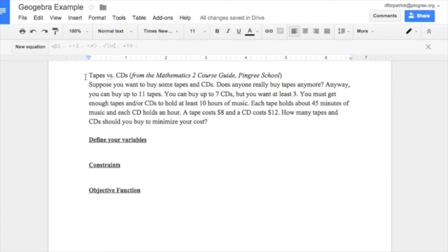So let's read it together. Suppose you want to buy some tapes and CDs. You can buy up to 11 tapes, you can buy up to 7 CDs, but you want at least 3. You must get enough tapes or CDs to hold at least 10 hours of music.